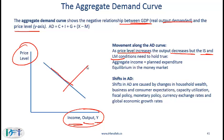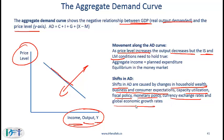What causes the aggregate demand curve to shift? Shifts in aggregate demand are caused by changes in household wealth, business and consumer expectations, capacity utilization, fiscal policy, monetary policy, currency exchange rates, and global economic growth rates. You can use common sense to determine how a particular change impacts aggregate demand — for example, if household wealth goes up, aggregate demand will shift to the right. As I keep saying in economics: if all else fails, use common sense.